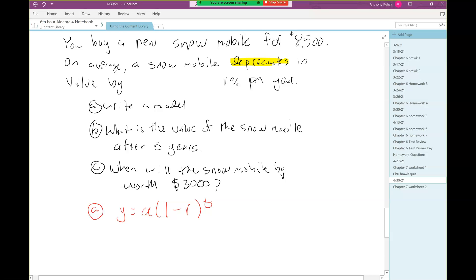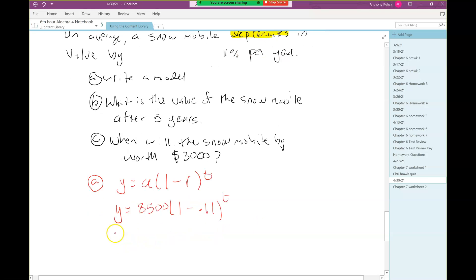y is going to represent the value of the snowmobile in the future. That's one of the things that's changing along with time. As time goes by, the snowmobile's worth less and less. So y and t are going to be our independent and dependent variables. What value should we put in for a? The initial value, that's 8,500. And R? The rate of change, 11% becomes 0.11. We can clean that up by subtracting: 1 minus 0.11 gives me 0.89.